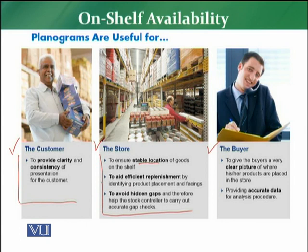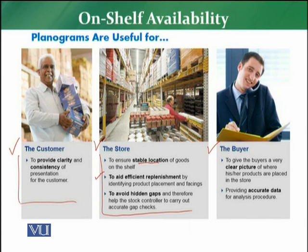The second benefit to the store is to aid efficient replenishment by identifying product placements and facings. For example, if the plan says four facings of a particular ketchup brand, the merchandiser must replenish those four facings every time. He cannot by himself reduce or increase the number of facings for any brand — he has to religiously follow the planogram. This gives an efficient way of replenishing because there is a proper plan in place.